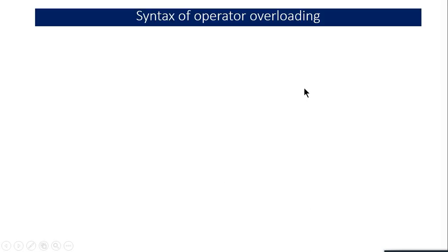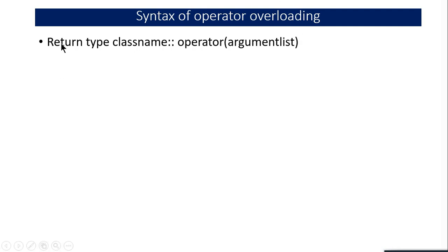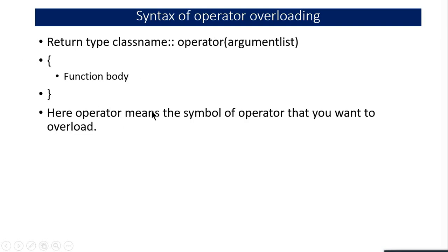Remember the syntax for operator overloading. Inside your class, write: return type, followed by the class name, scope resolution operator, then the keyword operator followed by the symbol (plus, minus, multiply, divide), then the argument list. Inside the function body you write your code to perform the operator overloading. The operator symbol is whatever you want to overload.